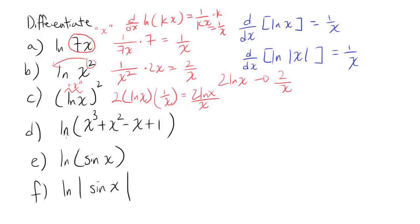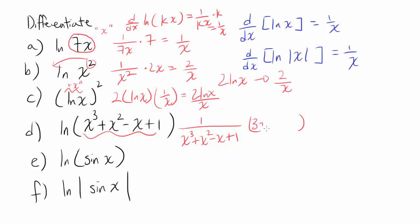Now let's look at part d: natural log of x cubed plus x squared minus x plus 1. Letting this entire expression be our u, you get 1 over (x³ + x² − x + 1), and you have to multiply by the derivative of that expression, which is 3x² + 2x − 1. So we have (3x² + 2x − 1) divided by (x³ + x² − x + 1).